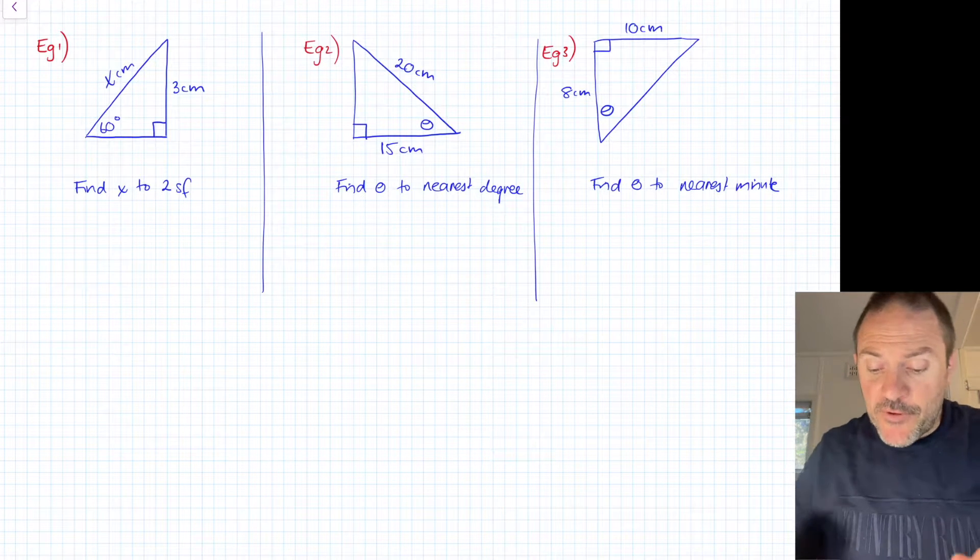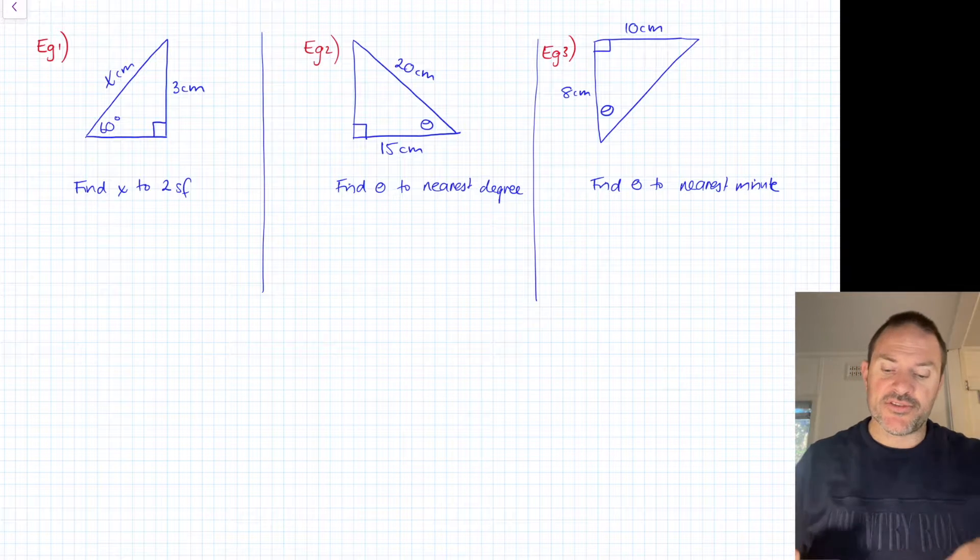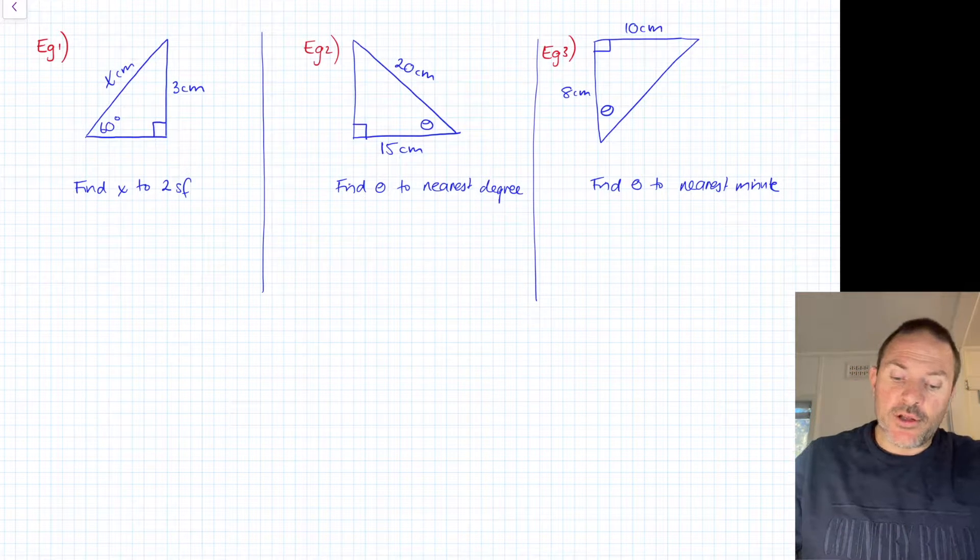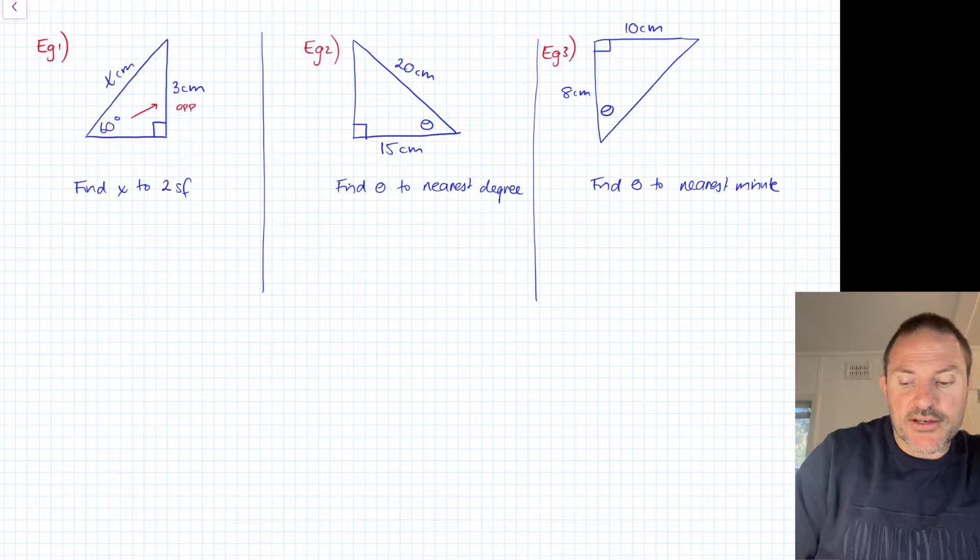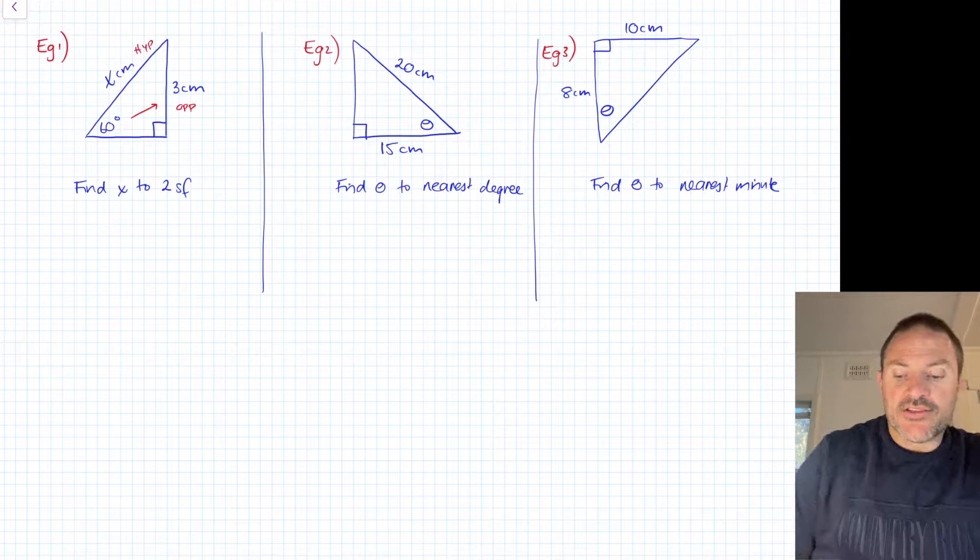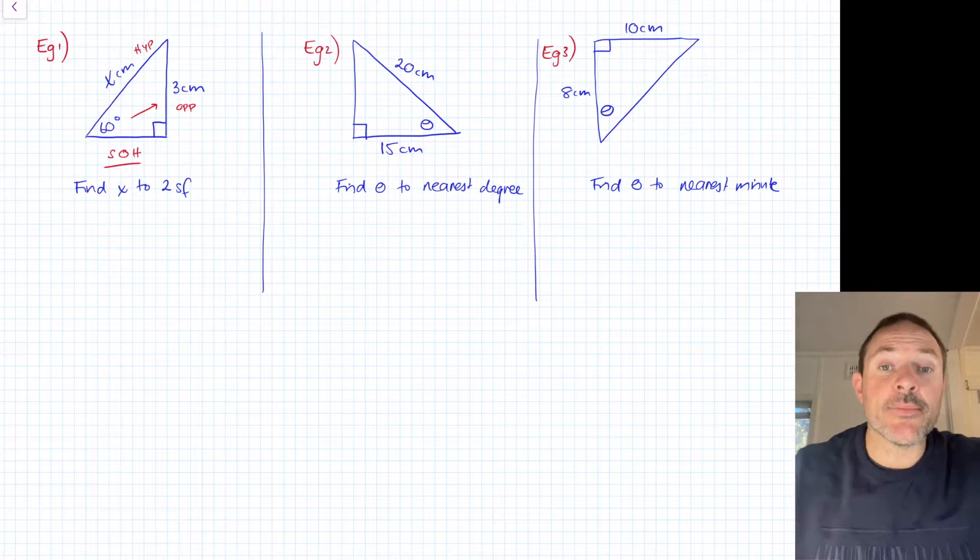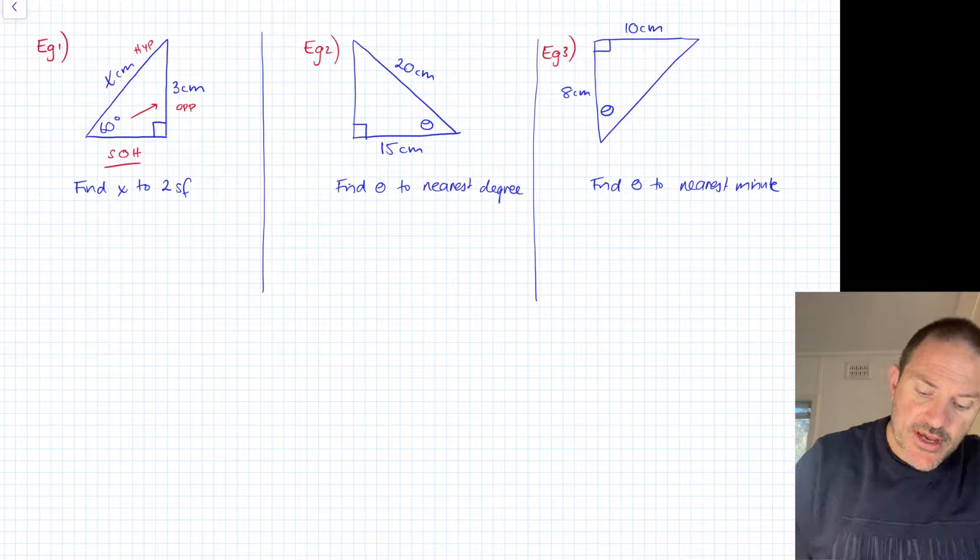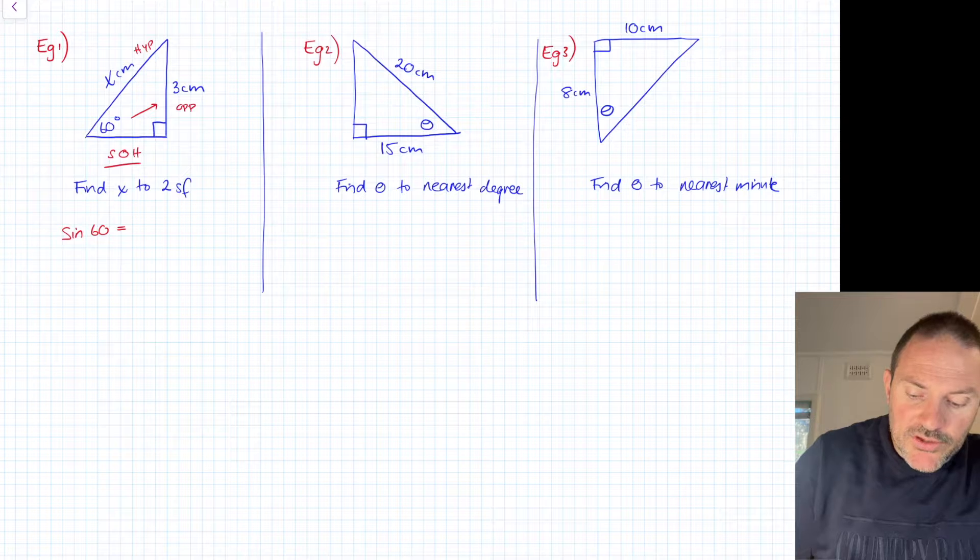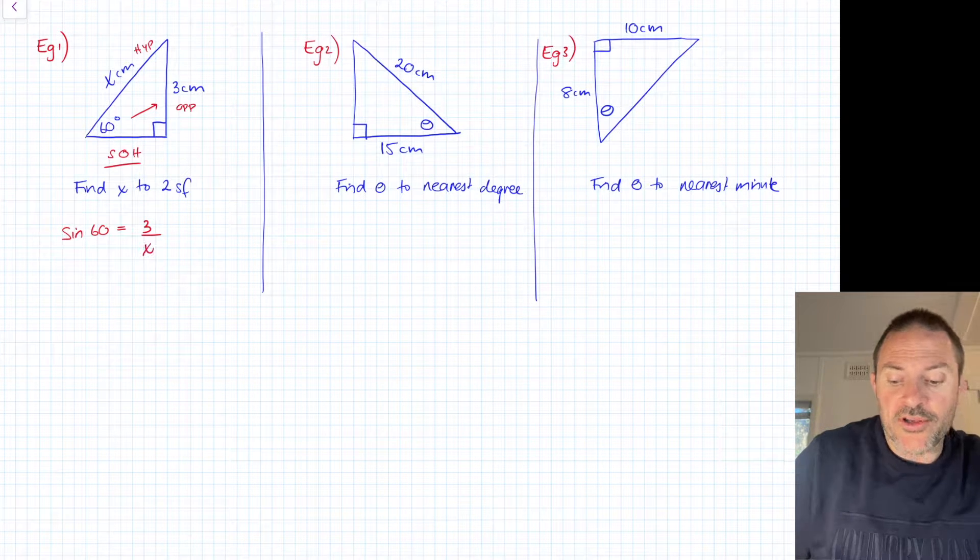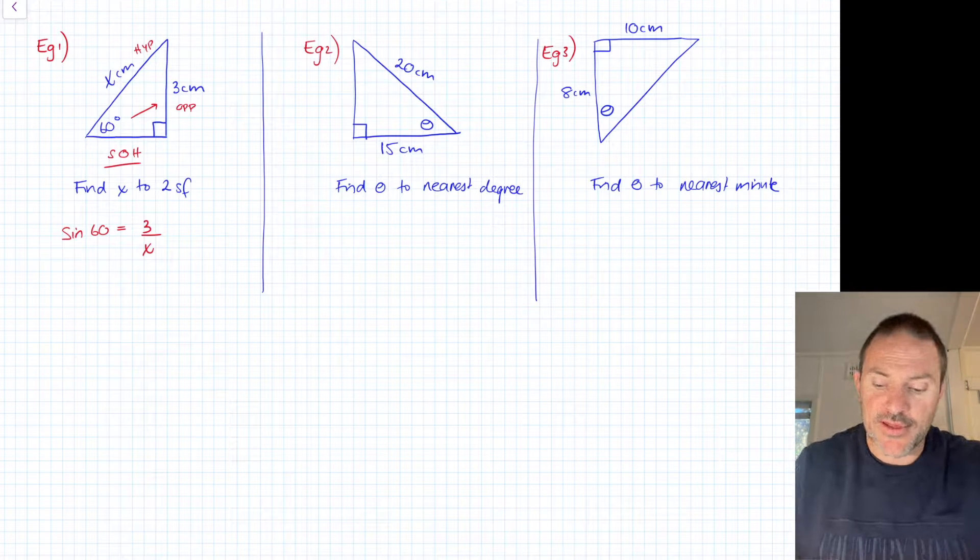Alright, how'd you go? So the first one, remember, pause if you haven't done so and have a crack at the questions first. I'm going to look at this question in regards to 60 degrees. We have the opposite side, we have the hypotenuse side. So opposite and hypotenuse, that's going to be our sine rule. Opposite over hypotenuse.